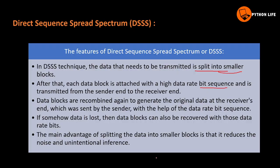If some data is lost during transmission, the data blocks can be recombined using those data rate bit sequences. The sequence numbering, like 1, 2, 3, allows for recovery of lost packets.